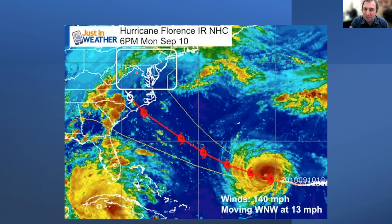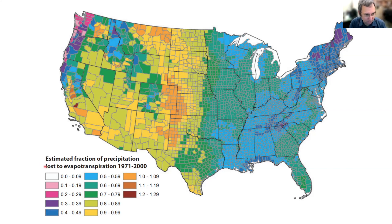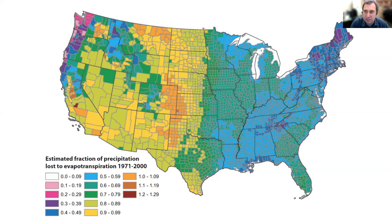It's just that this type of color map doesn't reveal the data in a way that fits with our perceptions. Here's another example — a plot from a paper about estimated fraction of precipitation lost to evapotranspiration over three decades. If you look at this plot, the thing that might stand out to you immediately is there's this line going right down the middle of the country — like, oh my goodness, what dramatic difference is happening there?